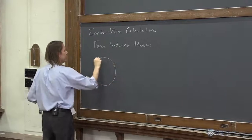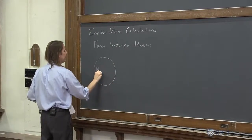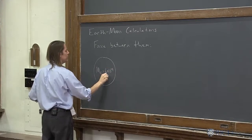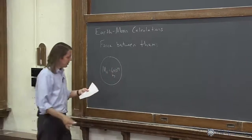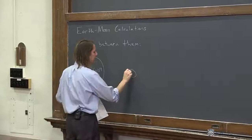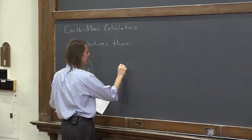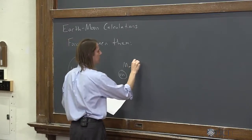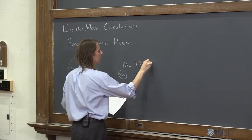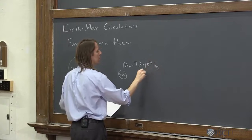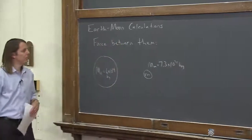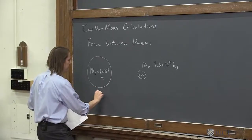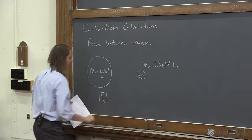So here's the Earth, and the mass of the Earth is 6 times 10 to the 24 kilograms. And somewhere out here, not to scale, is the Moon. And the mass of the Moon is 7.3 times 10 to the 22 kilograms, so less massive. So we can run the numbers real quick.